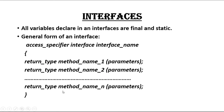You can specify any number of methods — methods one, two, up to N — in an interface. But keep in mind that all those methods are abstract methods, meaning all those methods do not contain a body.